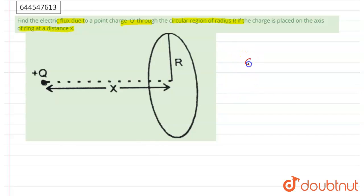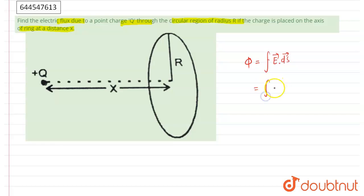So in that condition, flux φ is equal to the integration of E vector dot ds vector. The ds vector is the area of the element. We can also say that it equals E ds cosθ, where θ is the angle between the electric field and the ds vector.